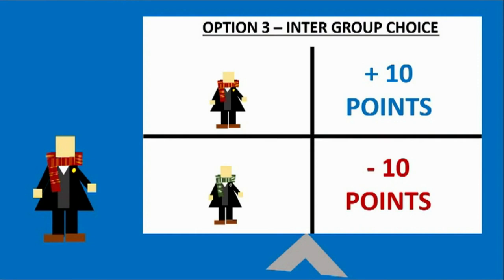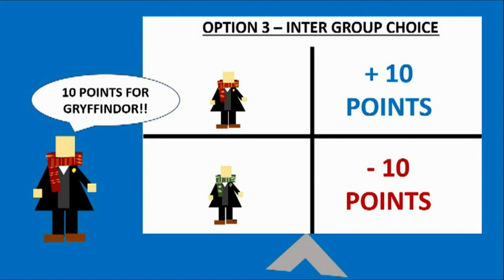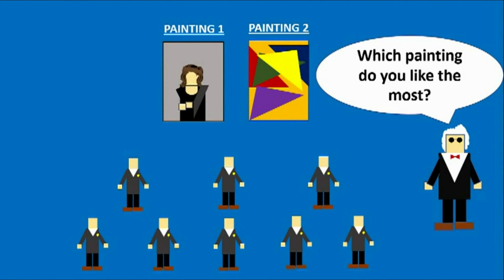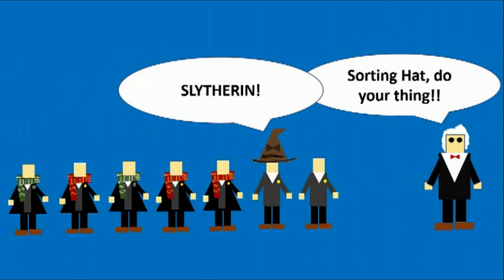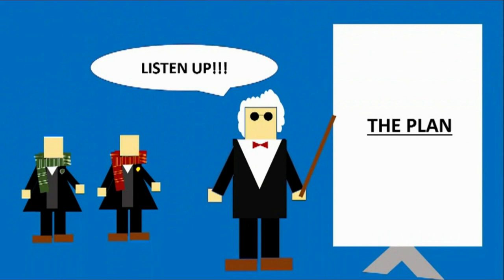In the second experiment, the boys were shown two paintings and asked to pick which one they liked the most. Based on their preference, they were divided into two groups. Like in the first experiment, the boys were instructed to allocate points, but unlike the first experiment, the choices were a bit different.